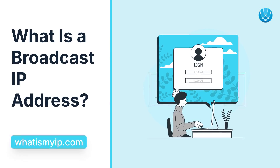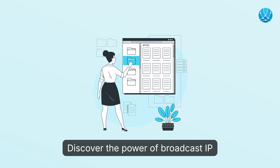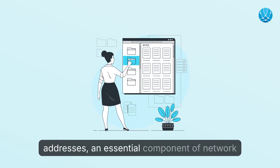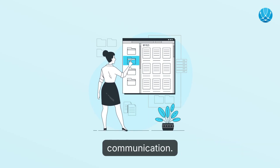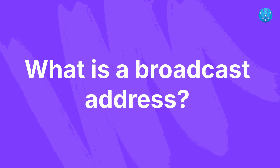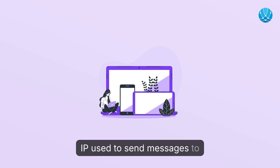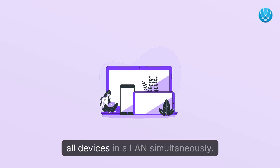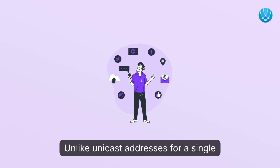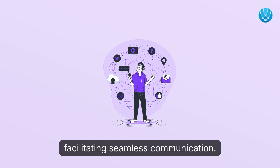What is a broadcast IP address? A broadcast address is a special IP used to send messages to all devices in a LAN simultaneously. Unlike unicast addresses, which target a single device, broadcast IPs reach every participant, facilitating seamless communication.